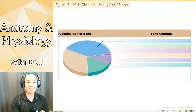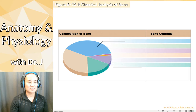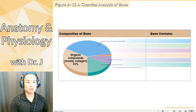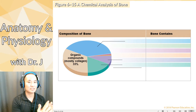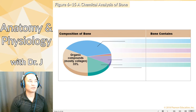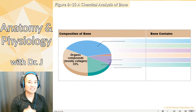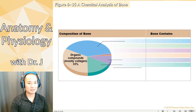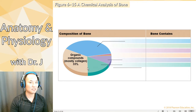Let's take a step back and talk about what bone is. We talked about bone matrix last lecture. Bone is a connective tissue, so it has protein fibers and some sort of ground substance. The main protein fiber in bone is collagen — roughly a third. When I show a pie chart, don't memorize the exact percentages unless I say so. The main point is you have a lot of collagen, but it's not the majority of bone matrix.